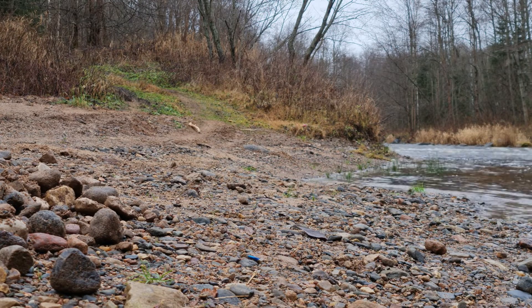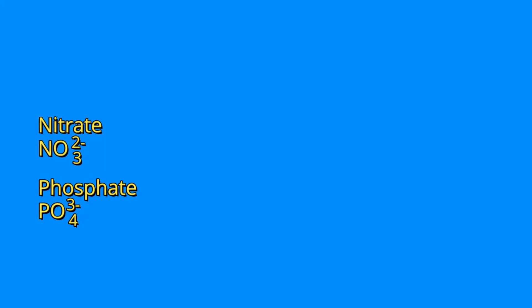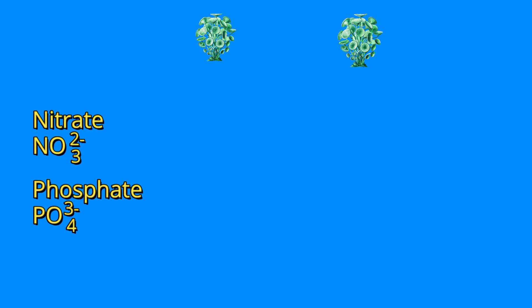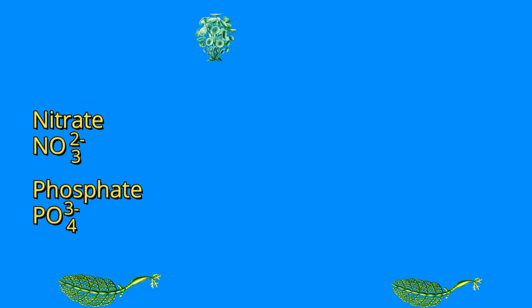Eutrophication occurs in some stages. First, increased nutrient availability. Then, an exaggerated increase in the number of microscopic algae and cyanobacteria, with the formation of a layer that prevents the exchange of gases with the atmosphere and reduces the passage of light. This leads to the death of rooted plants and also of algae below the surface, due to the impediment of the passage of light and the performance of photosynthesis, with a reduction of dissolved oxygen and available food.